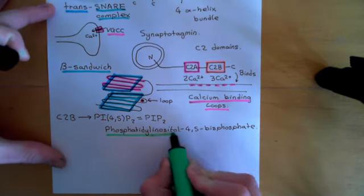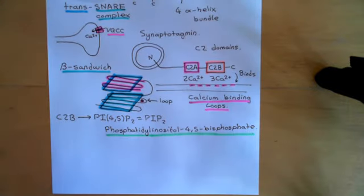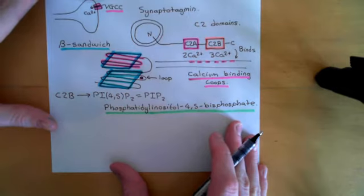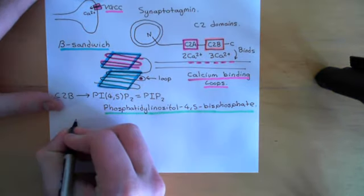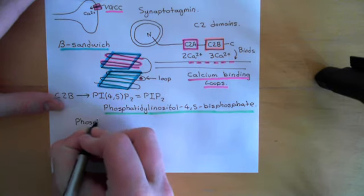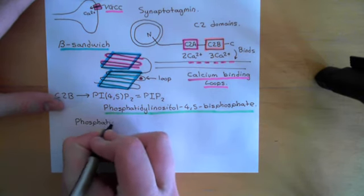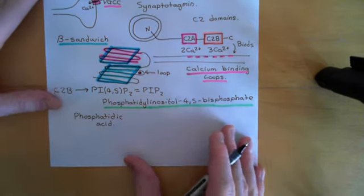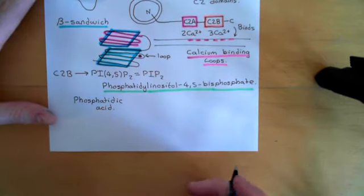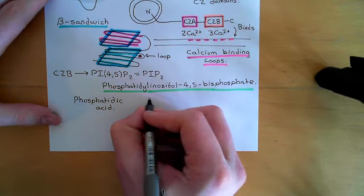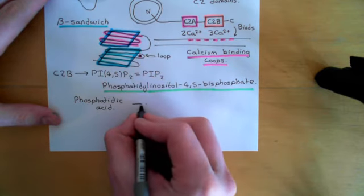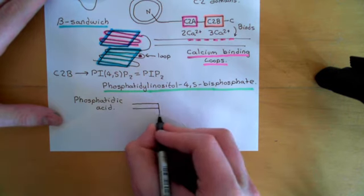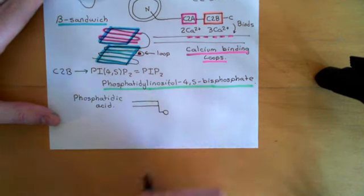Let me draw a basic picture of phosphatidyl inositol 4,5-bisphosphate and understand the structure from the name. The prefix 'phosphatidyl' means that the structure is going to contain phosphatidic acid. Most phospholipids contain phosphatidic acid. The structure of phosphatidic acid basically consists of a glycerol molecule with two long-chain carboxylic acids attached to it and a phosphate group attached to it.